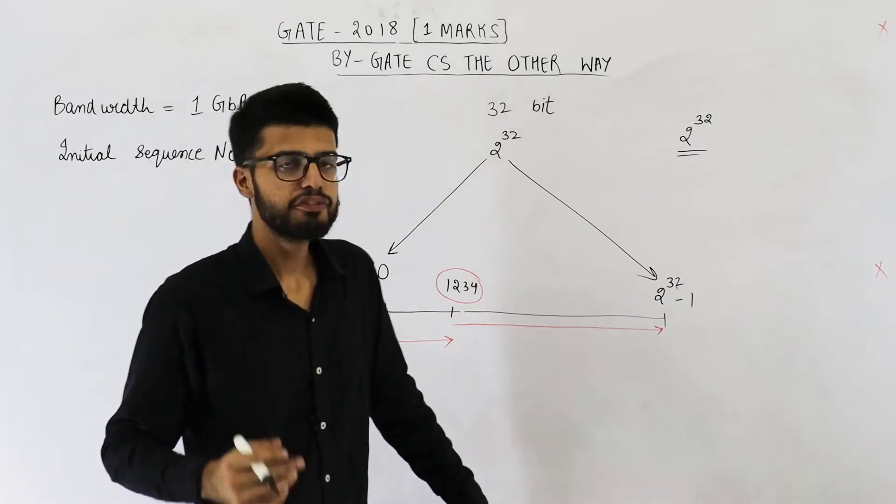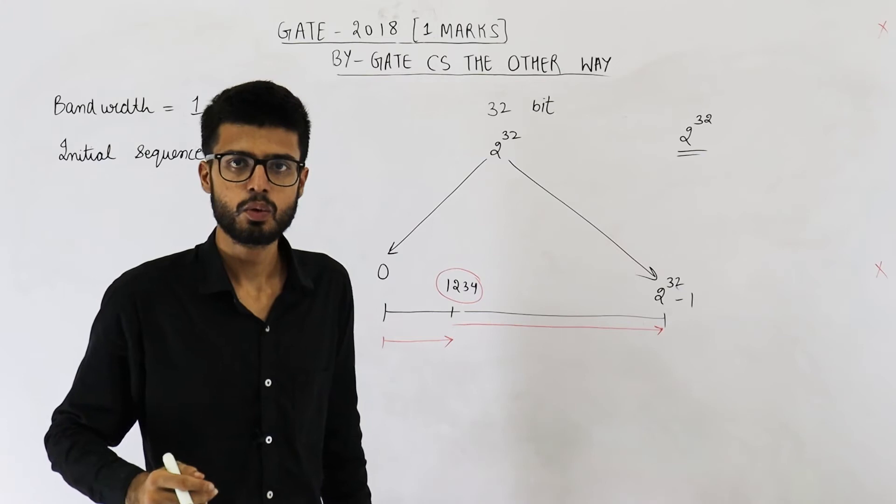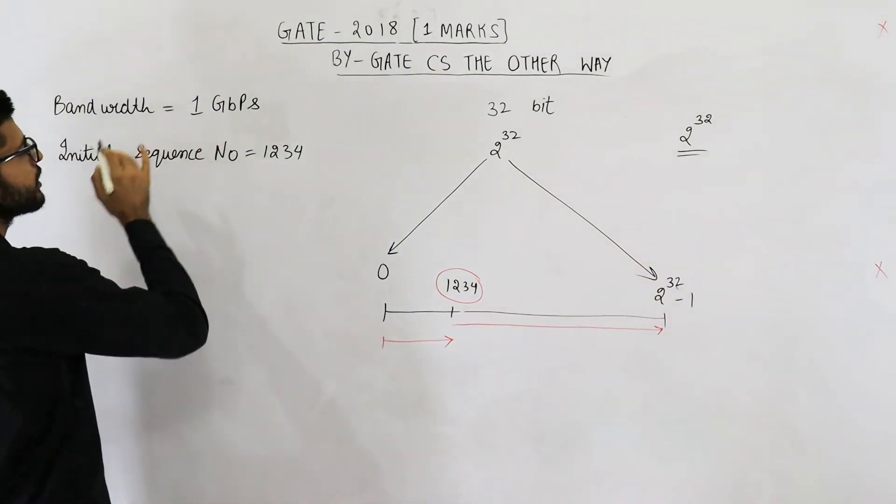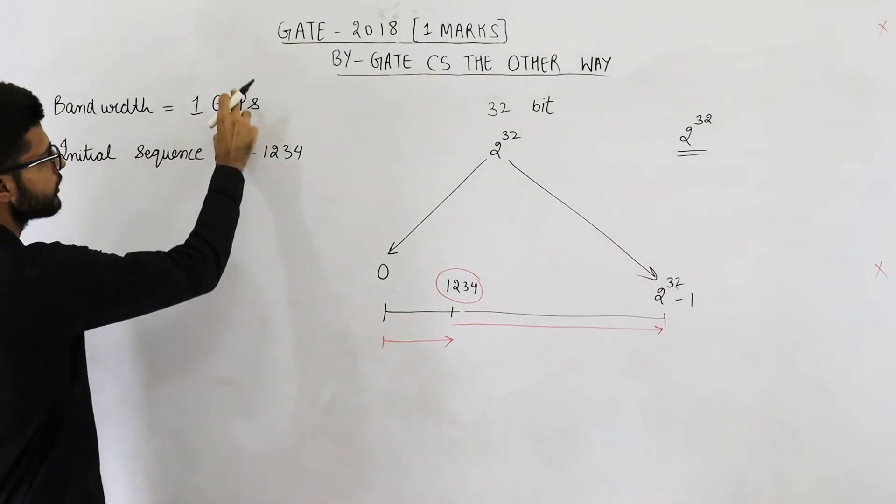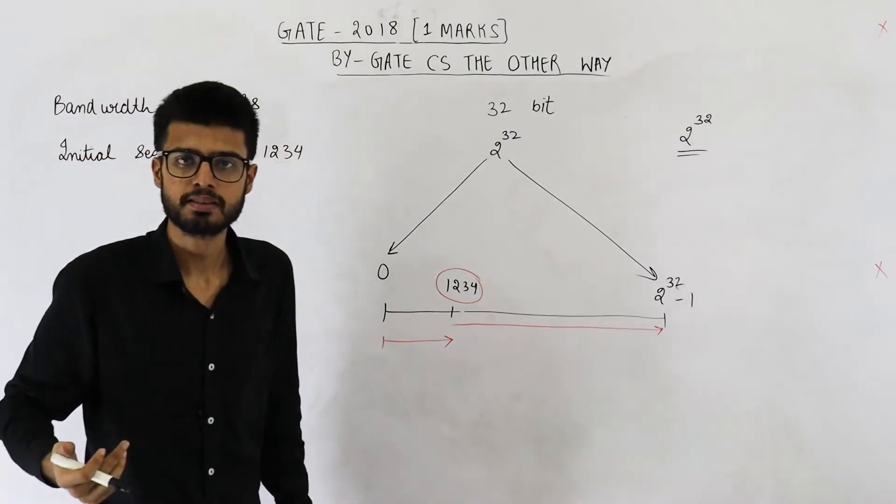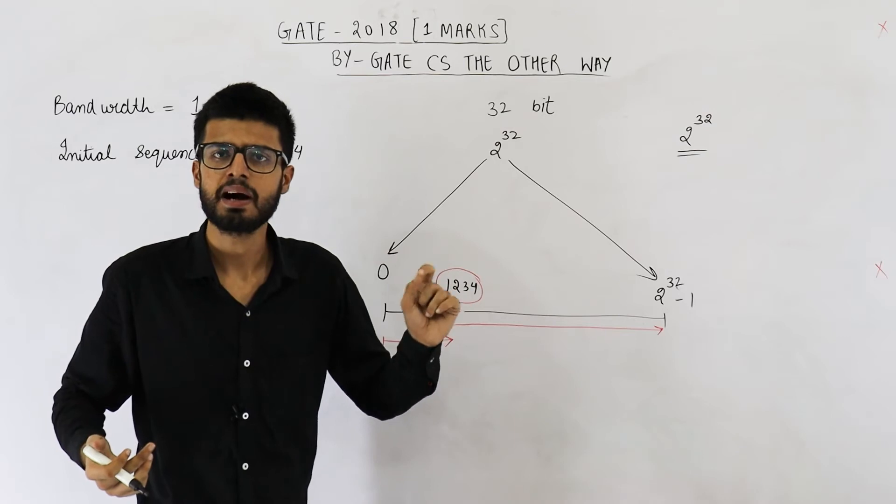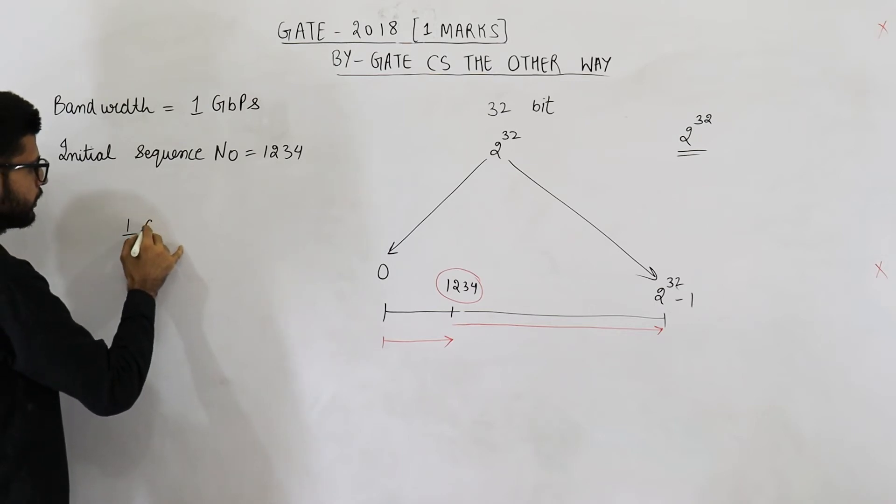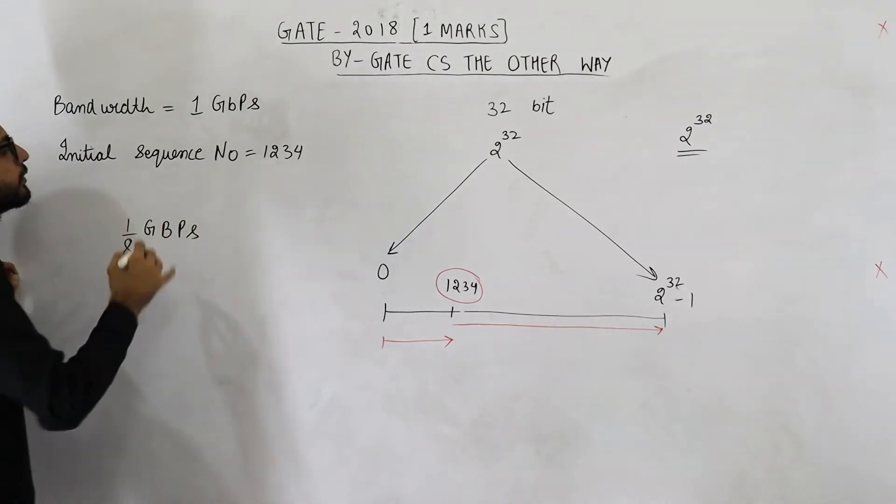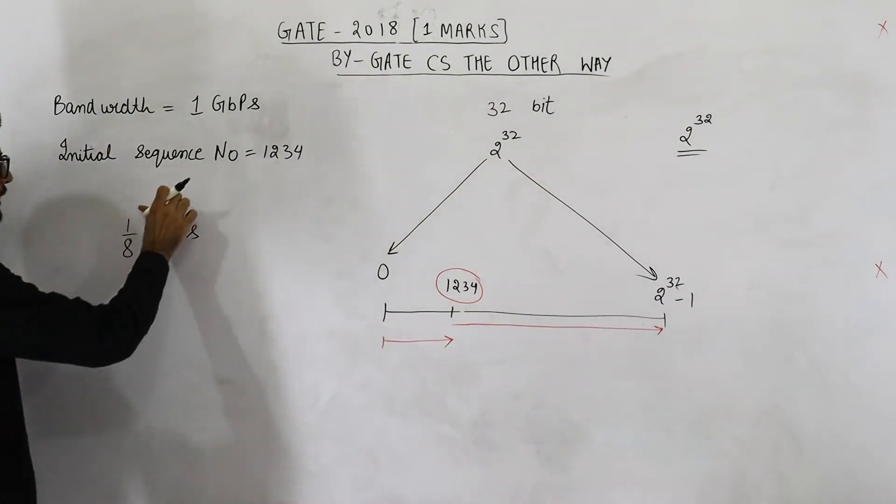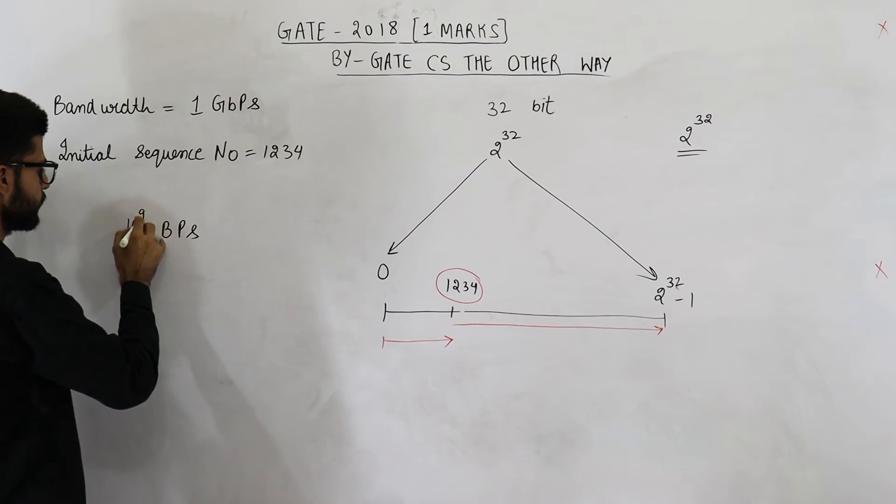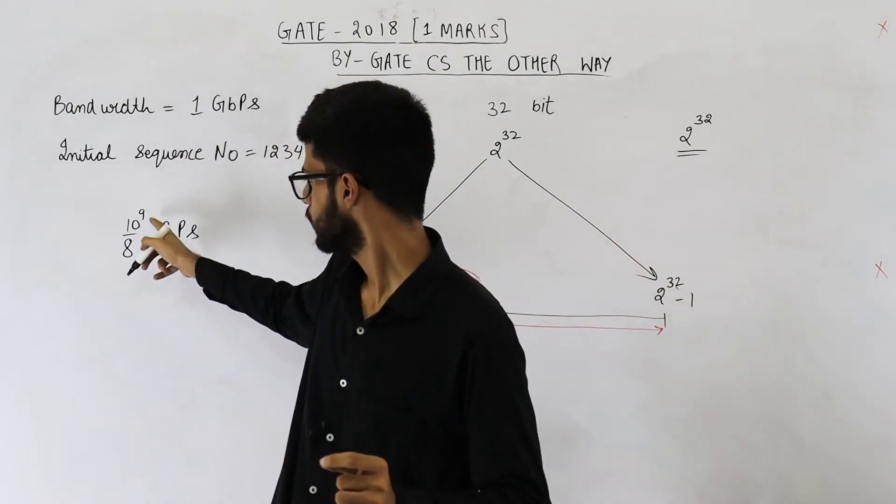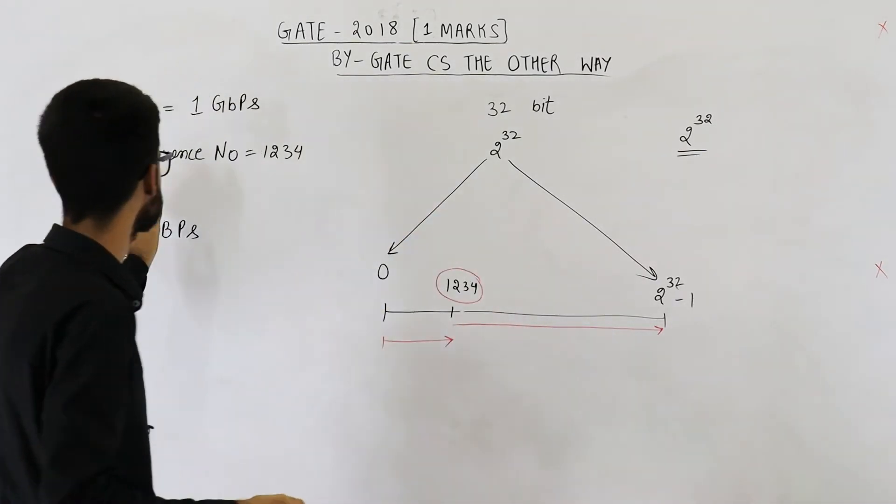Now, every byte gets a sequence number. Let us find out in how much time these many bytes can be transmitted. We can easily find that using bandwidth. Bandwidth is 1 Gbps. It is in bits. Let us convert it into bytes. Because TCP is byte oriented, every byte will consume a sequence number. So convert this into bytes. You will get 1 upon 8 gigabytes per second. Now, value of g is given as 10 raised to the power 9. Even if they don't mention it in the question, still in case of bandwidth, g is 10 raised to the power 9.